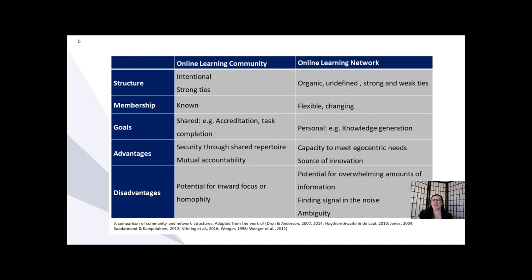Unfortunately, because of the flowing organic nature of networks and because they can be quite large, there is a lot of potential for an overwhelming amount of information, which I'm sure you've experienced when you've engaged with social media. It can be really difficult to find the high quality learning from all of the noise. There are certain strategies and literacies that you need to develop in order to make the best of the learning that happens in a network. Also, because you're following your own goal and you're quite self-directed, the learning can become quite ambiguous, and it can be easy to lose focus and go off track, whereas in a community you tend to keep each other on track a little bit more.